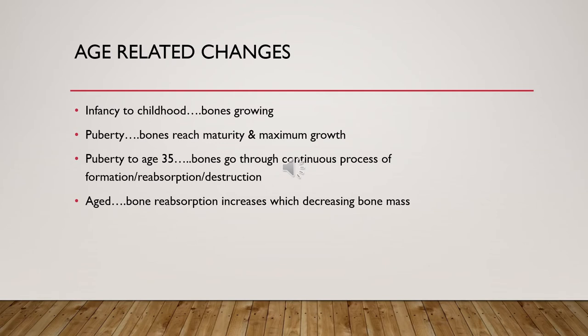As a person ages, musculoskeletal changes occur. In infancy through childhood, bones continue to grow — important for establishing a good foundation for adult bone maturity. In puberty, bones reach maturity and maximum growth. From puberty to age 35, bones go through a continuous process of formation, reabsorption, and destruction. In old age, bone reabsorption increases, decreasing overall bone mass, making the elderly prone to problems with balance, gait, and sensory issues. Chapter 49 of Iggy, page 1007, has a great table on musculoskeletal changes in the elderly.